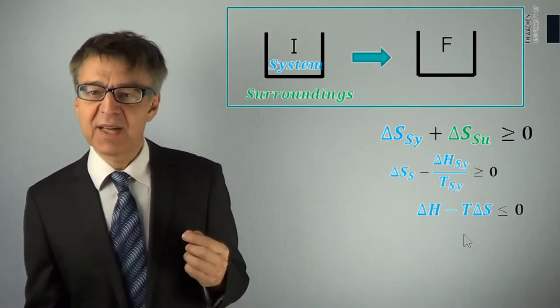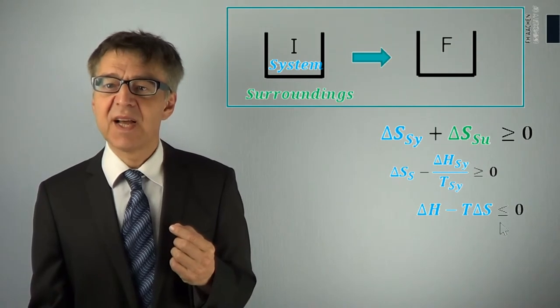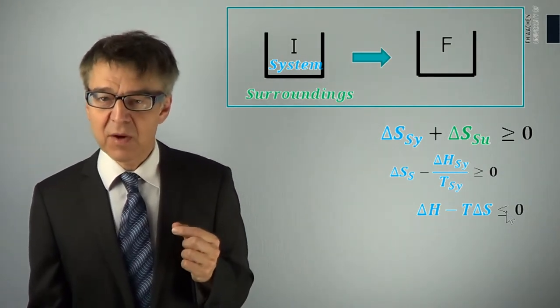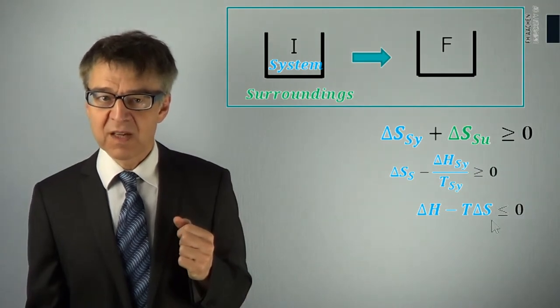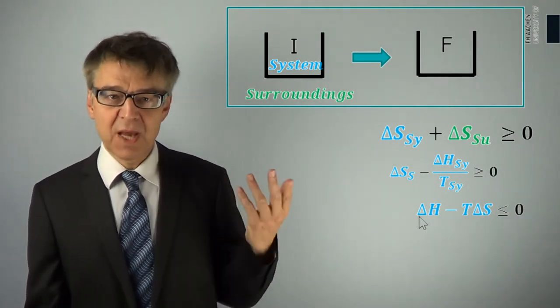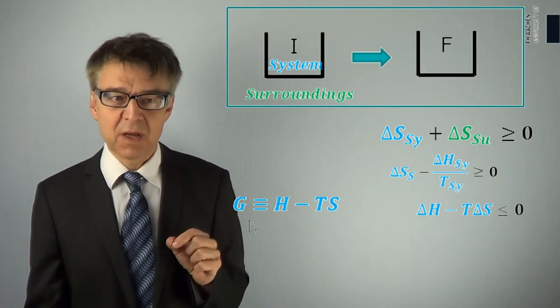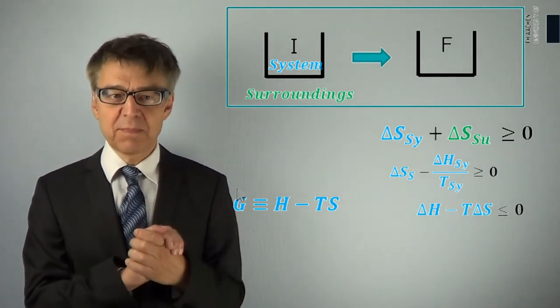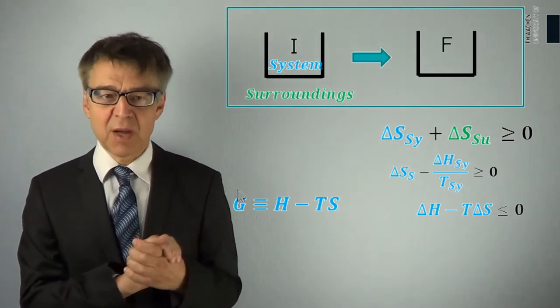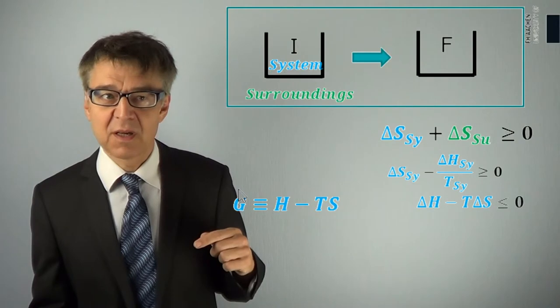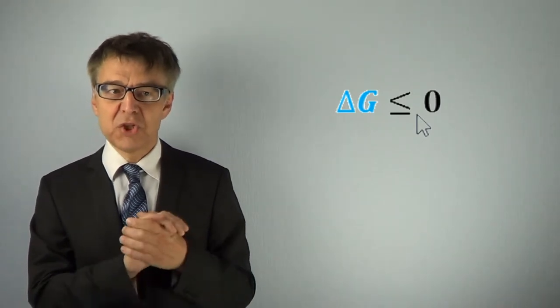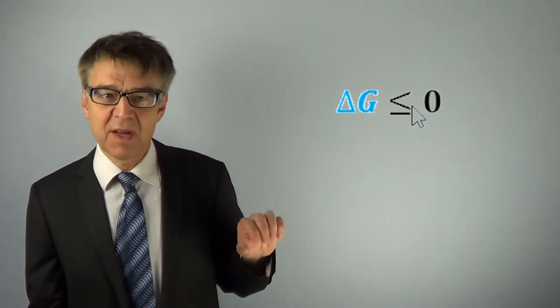Thus, we can substitute the entropy change of the surroundings by system parameters: delta S surroundings is equal to negative delta H system over T system. The second law states that the total entropy of the universe can only increase. This law can now be completely expressed in system variables. We obtain an equation equivalent to the second law, telling us that processes can only take place at a particular combination of delta S, delta H, and T. We convert this to: delta H minus T times delta S must be less than or equal to zero. We rename the combination H minus T times S as Gibbs free energy G. Then we come to a very simple criterion: for an isothermal process to be possible, delta G must be less than or equal to zero. G is a measure of instability; G can only decrease in a process, or at best stay the same — it can never increase.